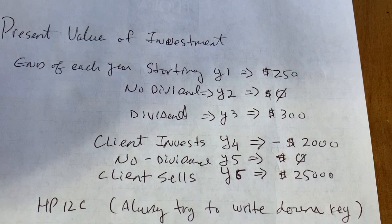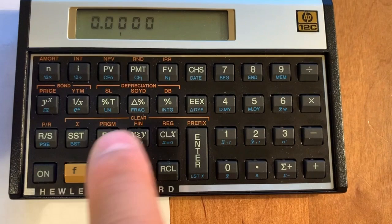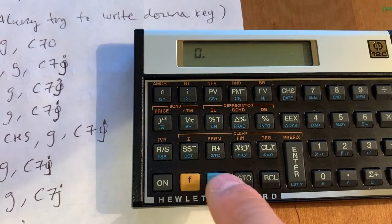So to do this, first, I always say clear out the registers. Starting out, you want to put $0 for CF0 because year zero, you're not getting anything or putting anything in. So you put $0, G, CF0.